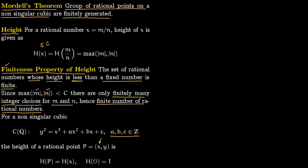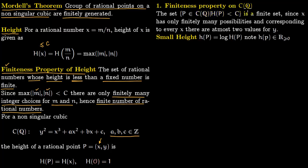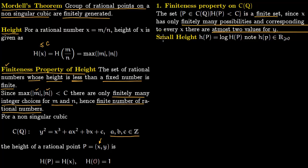We also assign height one to the special point at infinity. For the finiteness property on our curve, the set of points P with rational coordinates satisfying the equation and having height less than or equal to C is finite. This holds because the height only considers the x-coordinate, which has only finitely many possibilities. For each x, there are at most two values of y, so there are only finitely many points satisfying the equation.